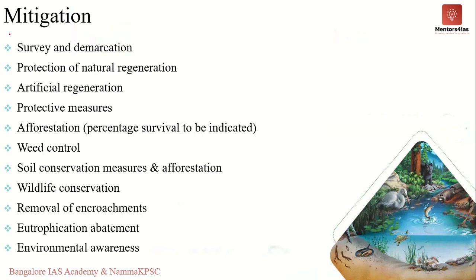There are certain steps which can be taken to mitigate the damage done to wetlands and to prevent further damage. Measures like afforestation, prevention of eutrophication, removing or clearing of encroachments, and environmental awareness all go a very long way in mitigating the damage. It is very important that we play a crucial role to ensure that the damage is reversed and also prevented in the future.